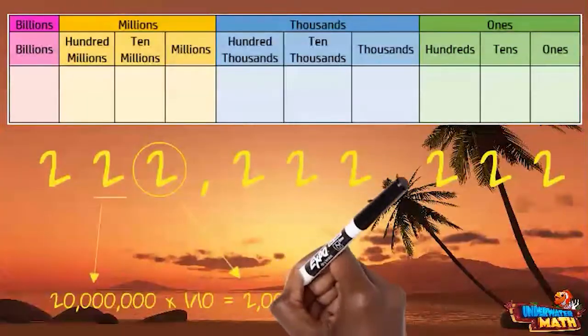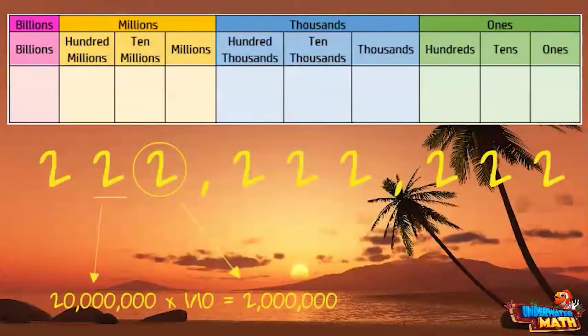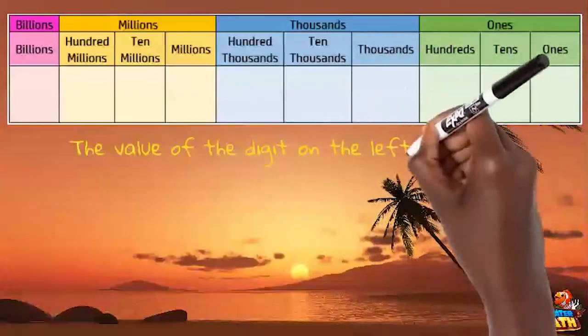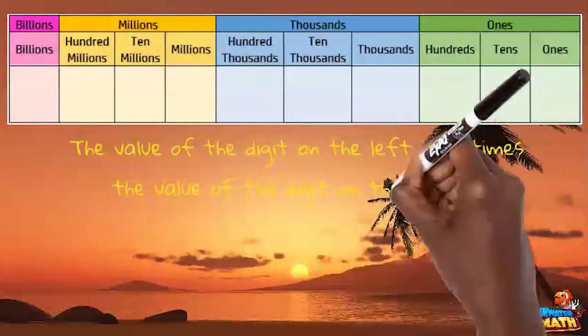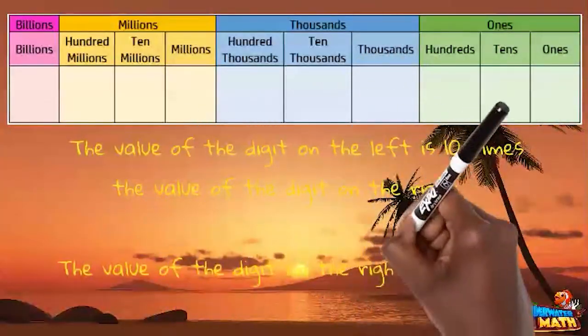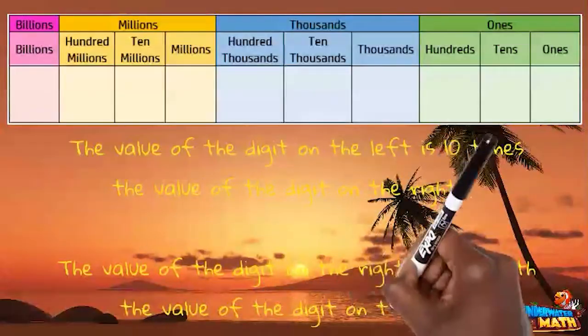The same would be true for any pair of digits that are next to each other. The value of the digit on the left is 10 times the value of the digit on the right, and the value of the digit on the right is one tenth the value of the digit on the left.